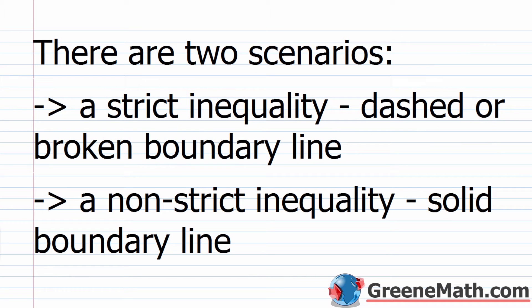There are two scenarios to know before you graph. A strict inequality — strictly less than or strictly greater than — gives us a dashed or broken boundary line. If you have a strict inequality, the boundary line is not part of your solution.